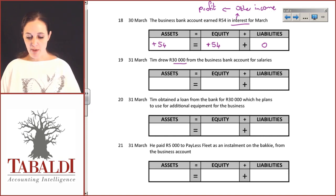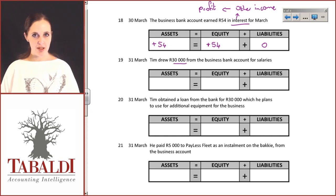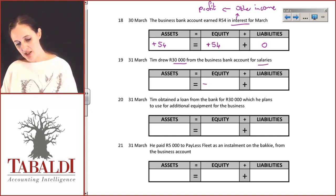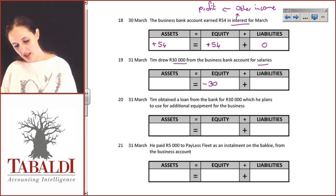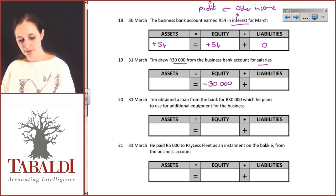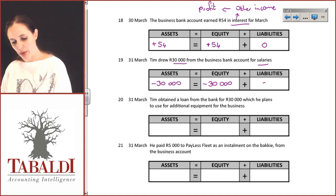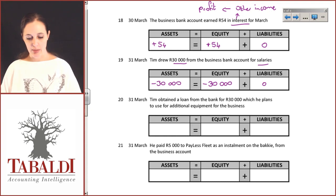He drew 30,000 Rand from the business bank account for salaries. Salaries are expenses, so expenses are going to decrease the equity by 30,000 Rand, and he has decreased the bank account by 30,000 Rand. No impact on liabilities.